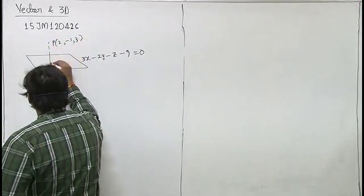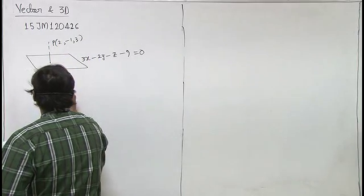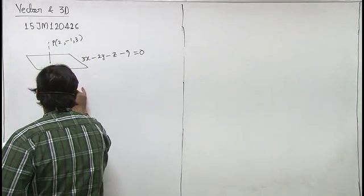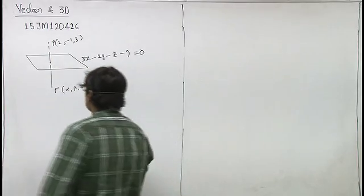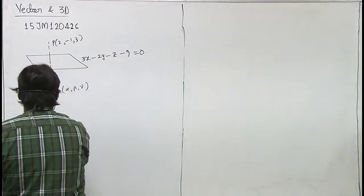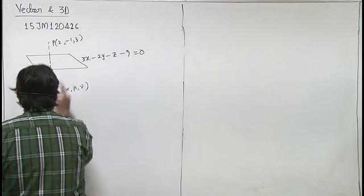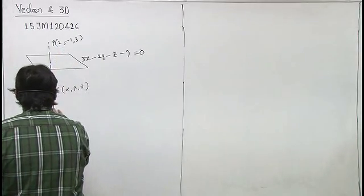Let me assume this as alpha, beta, gamma. The formula for finding reflection is: alpha minus x1, that is 2 upon 3. Alpha minus x1 upon a.